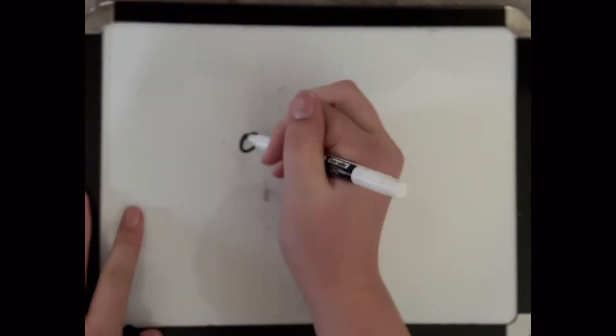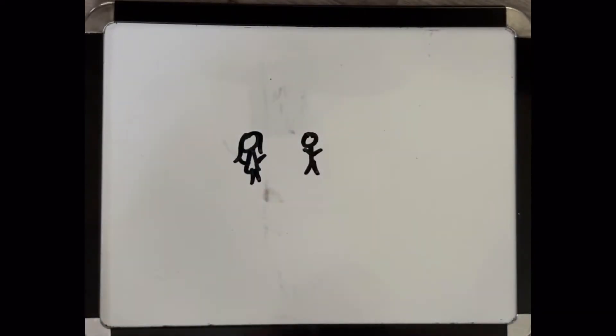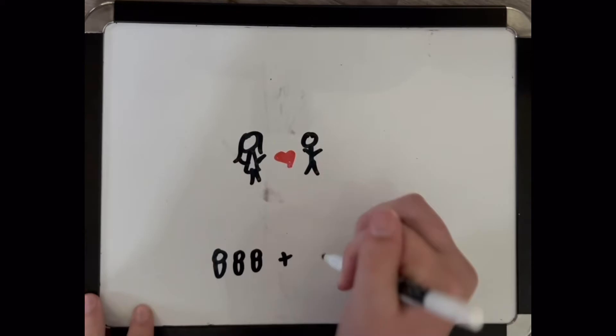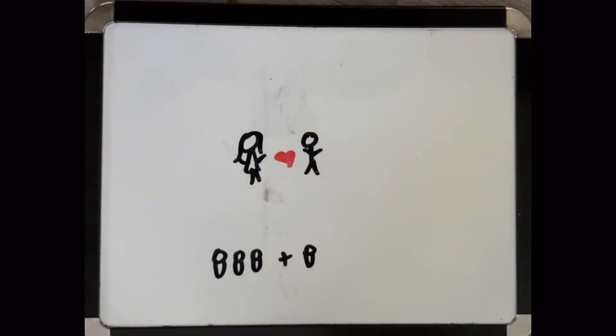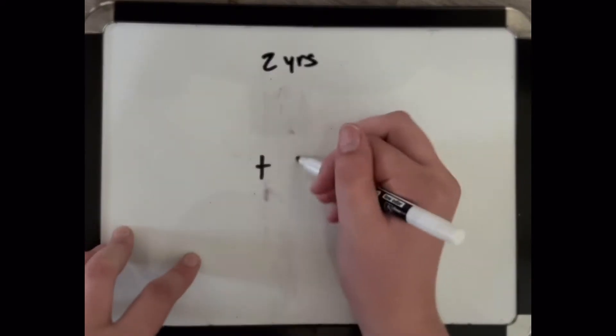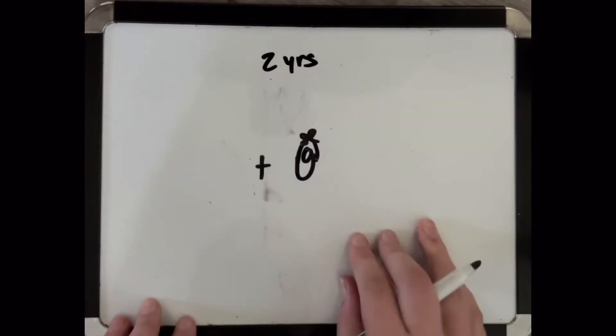My parents were set up on a date by my aunt and they later fell in love. After three kids, they had me on January 16th, 2003. Two years later, they had my little sister, and sadly my mom wasn't able to have any more kids.